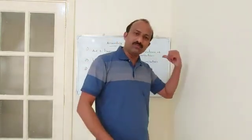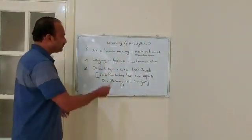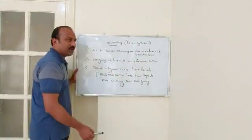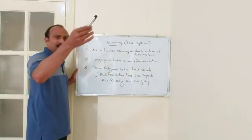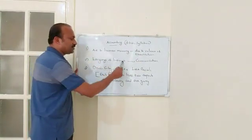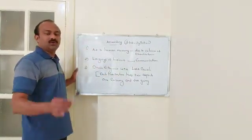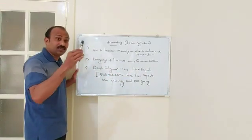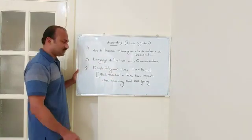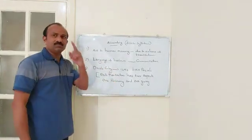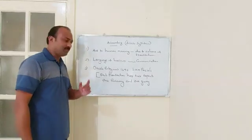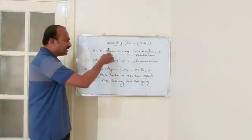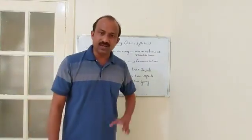To summarize the important points of the introduction to accounting: first, accounting is an aid to human memory — because the volume of transactions is increasing, human memory alone is insufficient. Second, modern accounting is often regarded as the language of business, used for communication purposes. Third, our accounting system is known as the double entry system of accounting, where each and every transaction has two aspects — one receiving and one giving.